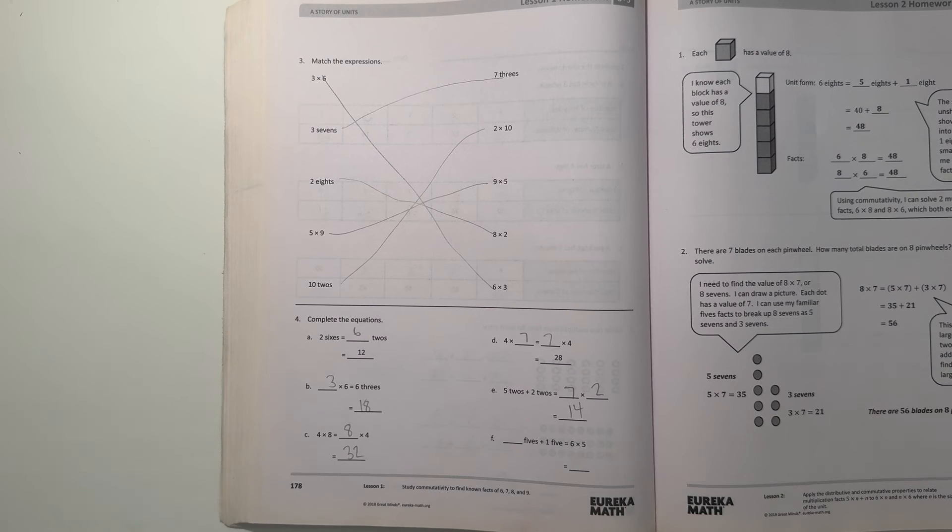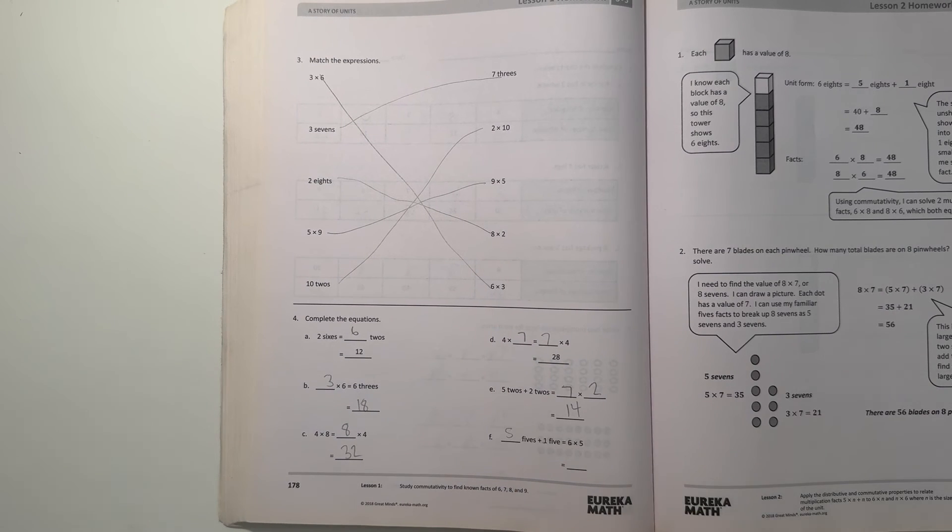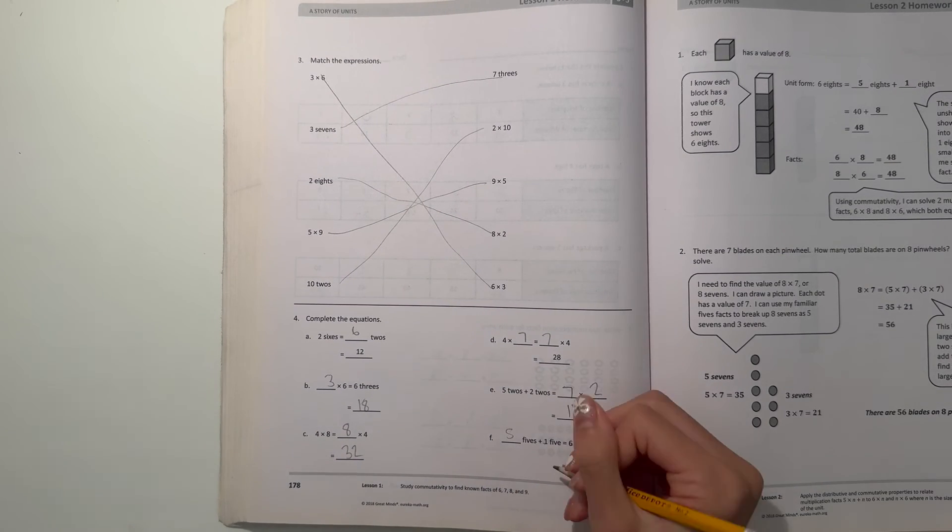And now this one, since there's a 6 here and there's already a 5, then that means 6 minus 1 is 5. So then 5 5's plus 1 5 equals 6 5's, which is 6 times 5, which gives us 30.